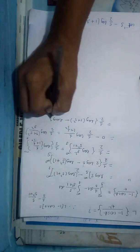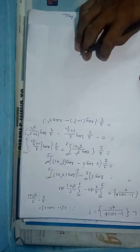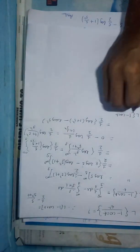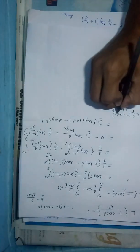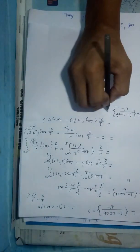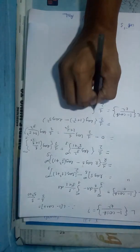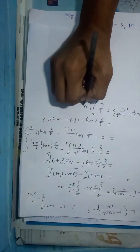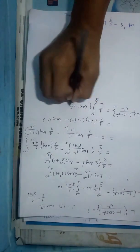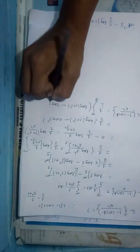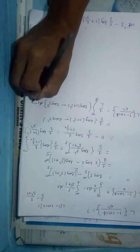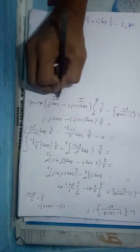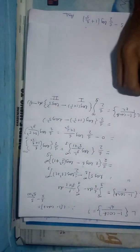Now what is the Laplace of (1 - cos t)/t²? We have to again integrate the whole term. It becomes the integral from s to infinity of [log(1 + s²) − log s²] ds. We can integrate these two terms separately.